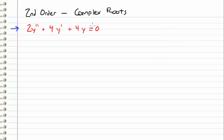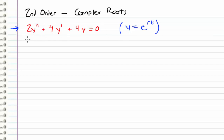Let's go ahead and take a look at this example right here. We have a constant coefficient homogeneous second order linear differential equation. Just like we have been doing for these types of equations, we are going to assume that y is of the form e to the r times t. We differentiate this twice, get expressions for y prime and y double prime, and throw it back into our differential equation. That'll give us our characteristic equation. I'm just going to pull off the coefficients, so we get 2r squared plus 4r plus 4.